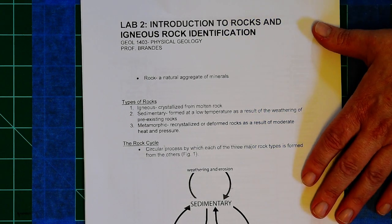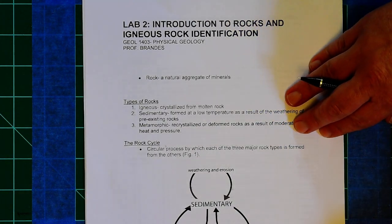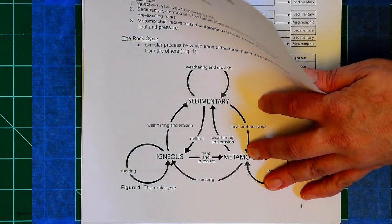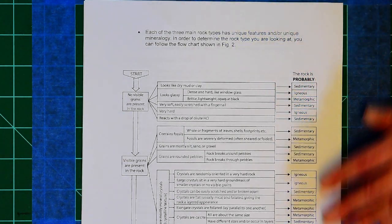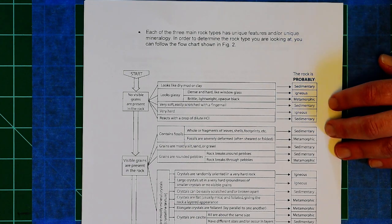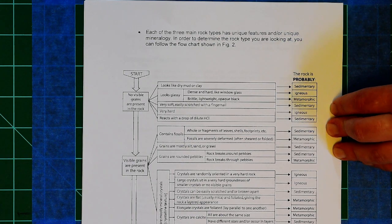In this handout, we basically review lots of the things we did in lecture—different types of rocks in the rock cycle. I also give you this flow chart here. You will not be using that in this lab. This is in case you ever find a rock that you have no idea if it's igneous, sedimentary, or metamorphic.